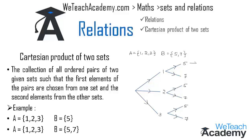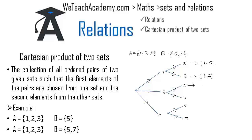Since 1 is mapped with 5 we get the ordered pair (1,5), and since 1 is mapped with 7 we get (1,7). The remaining ordered pairs are (2,5), (2,7), (3,5), and (3,7). This was a basic introduction on relations. Hope you understood the concept — do like and subscribe to vteeshacademy.com. Thanks for watching, have a nice day.